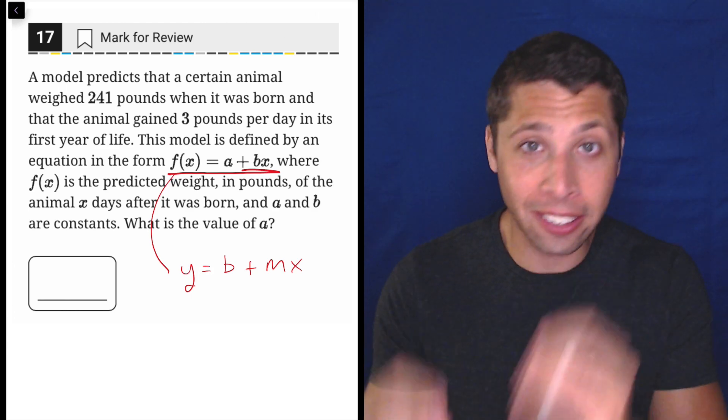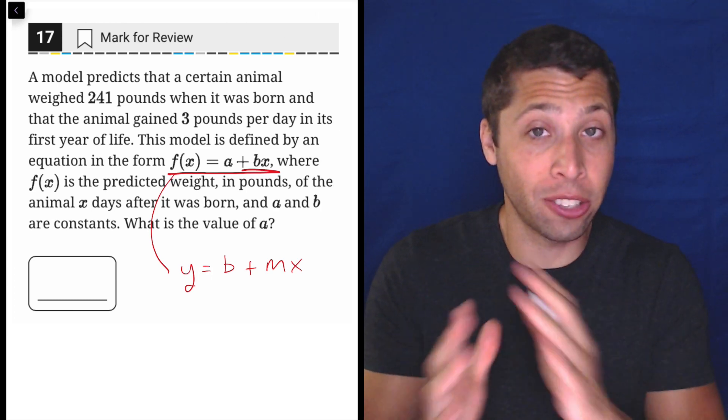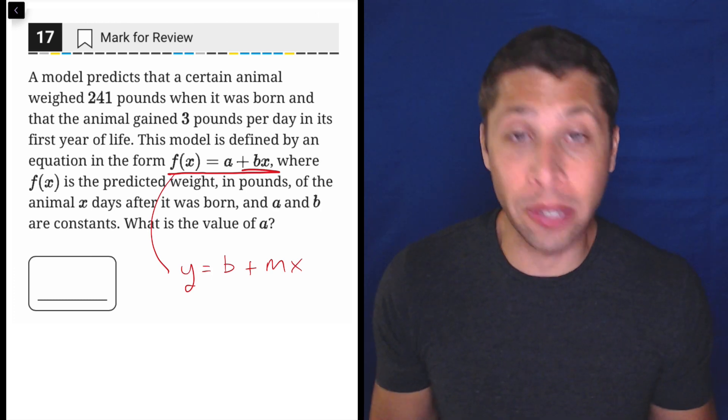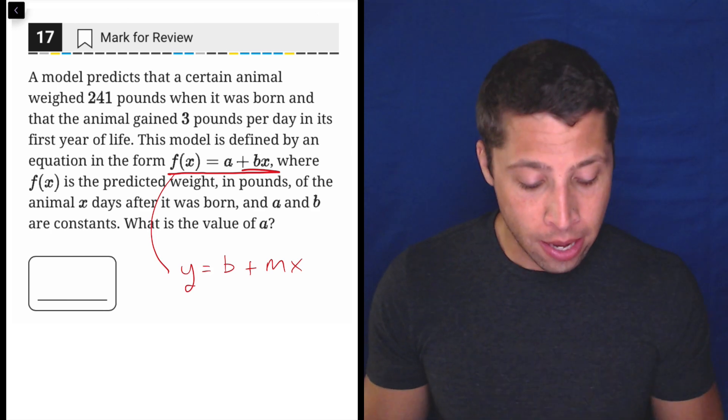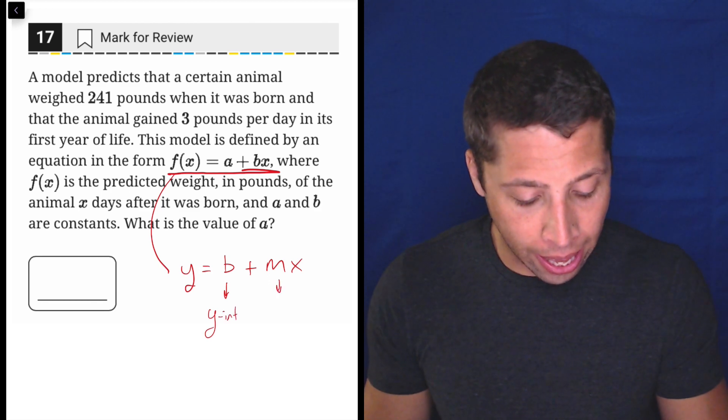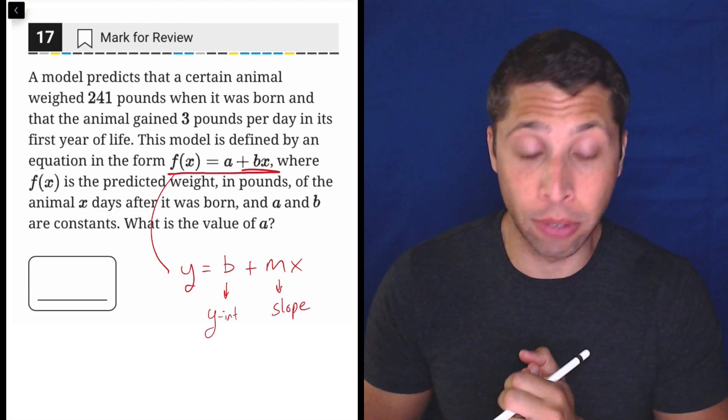We can't get so locked into the letters that when they switch them on us, we get flustered. The letter is arbitrary. We say y = mx + b because that's just what we say. What's really happening though with the m and the b is we have a y-intercept and a slope. Those are the two things that pretty much define every line.